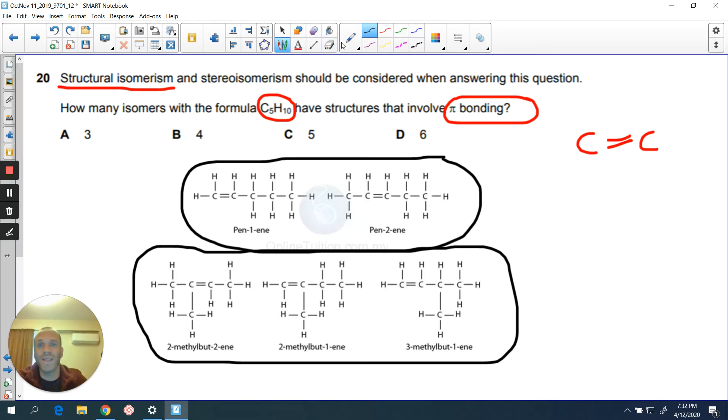But there is going to be a sixth isomer here and that will be a stereoisomer, one of our cis-trans isomers. The answer is going to be six and I'll just quickly show you which one is going to be the stereoisomer. So pent-2-ene is going to have cis-trans versions of itself.